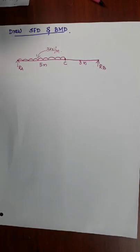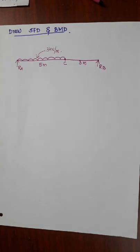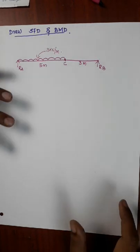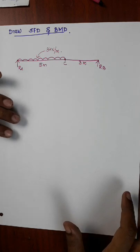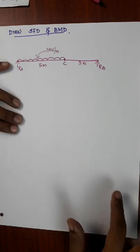Hello dear students. Let's get started with a simply supported beam. This is UDL. UDL refers to the shear force and bending moment diagram, and we are working on the shear force and bending moment diagram.